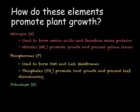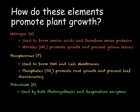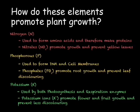Our final element is potassium. Potassium is required in order for both photosynthesis and respiration enzymes to work correctly. Potassium ions, K+ ions, are also required in order to promote good flower growth, fruit growth and to prevent the discolouration of leaves.